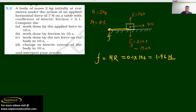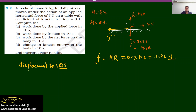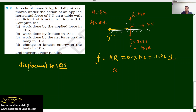Now we need to find work done by the applied force in 10 seconds. To find work done, we first need displacement. To find displacement, we first need acceleration. Acceleration = net force / mass. Net force = applied force − friction force = 7 − 1.96 = 5.04 Newton, divided by mass 2 kg.